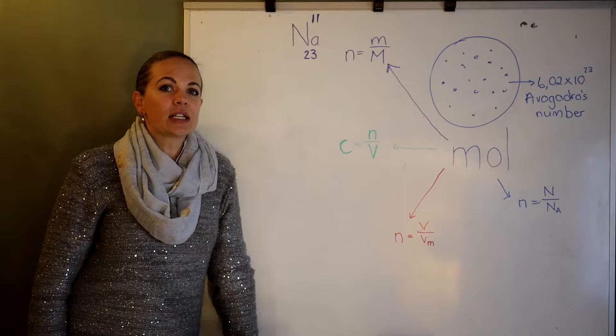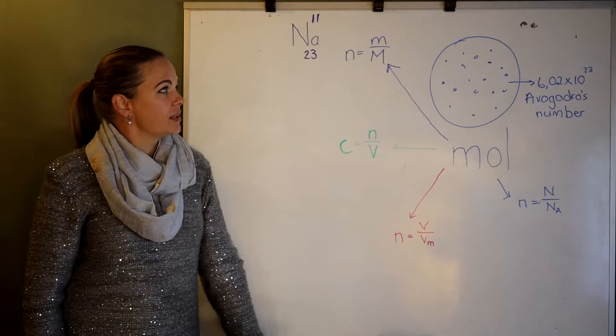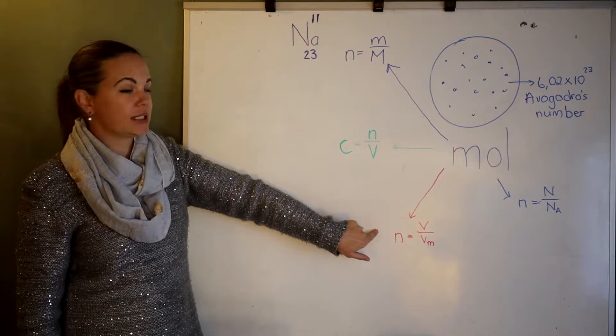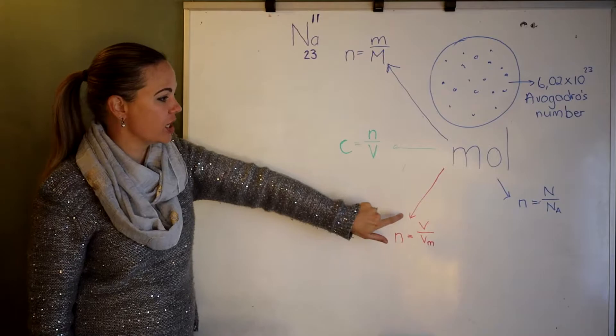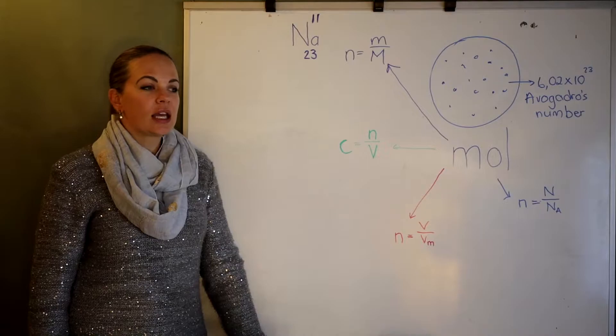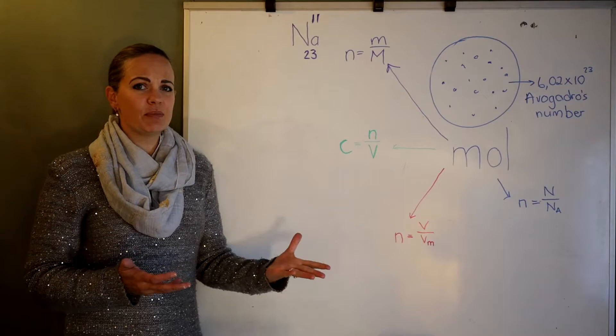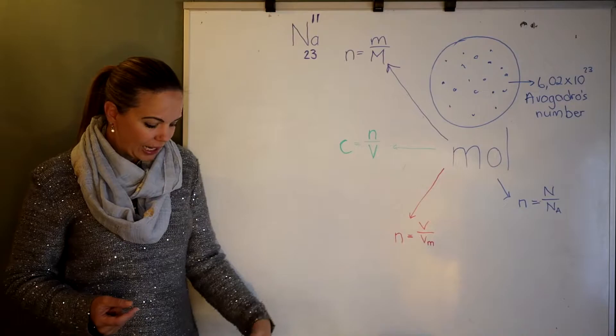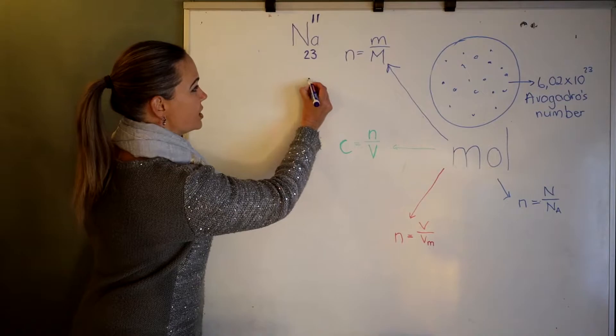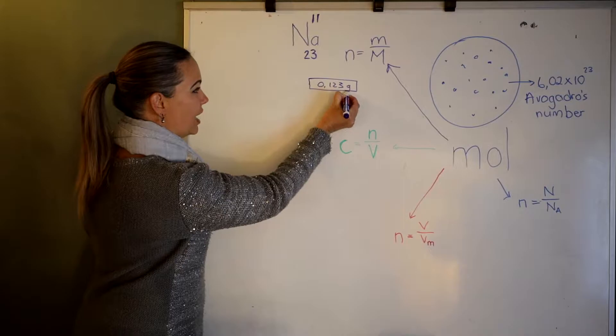Simple mole calculations that we'll look at in this video are mole and mass, concentration, and gas volumes. In a laboratory, if you need to work with a certain amount of a chemical, it's basically impossible to go and count out a number of moles of a substance. What we can do in a laboratory is measure the mass of a substance on a scale in grams — the SI unit for mass in chemistry.